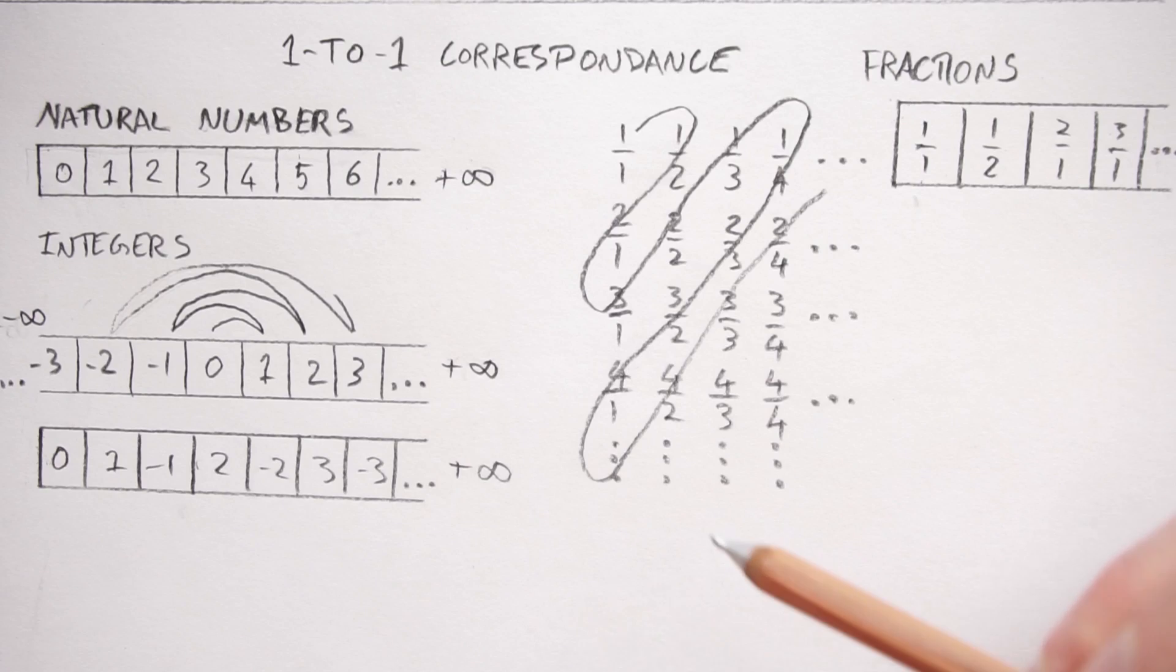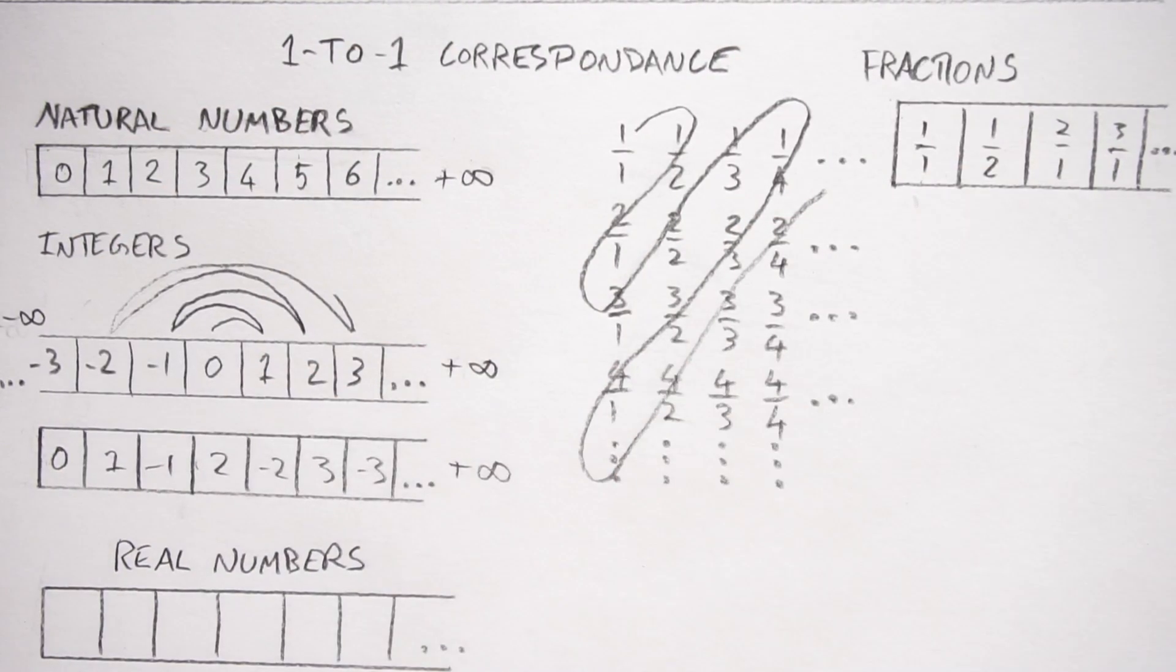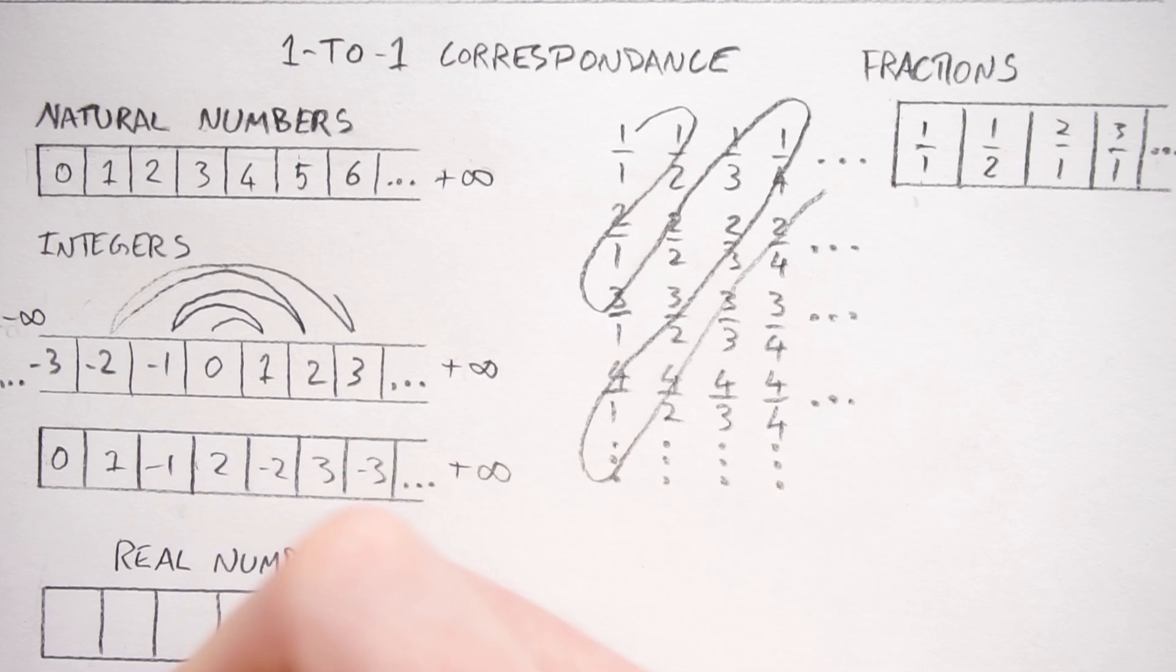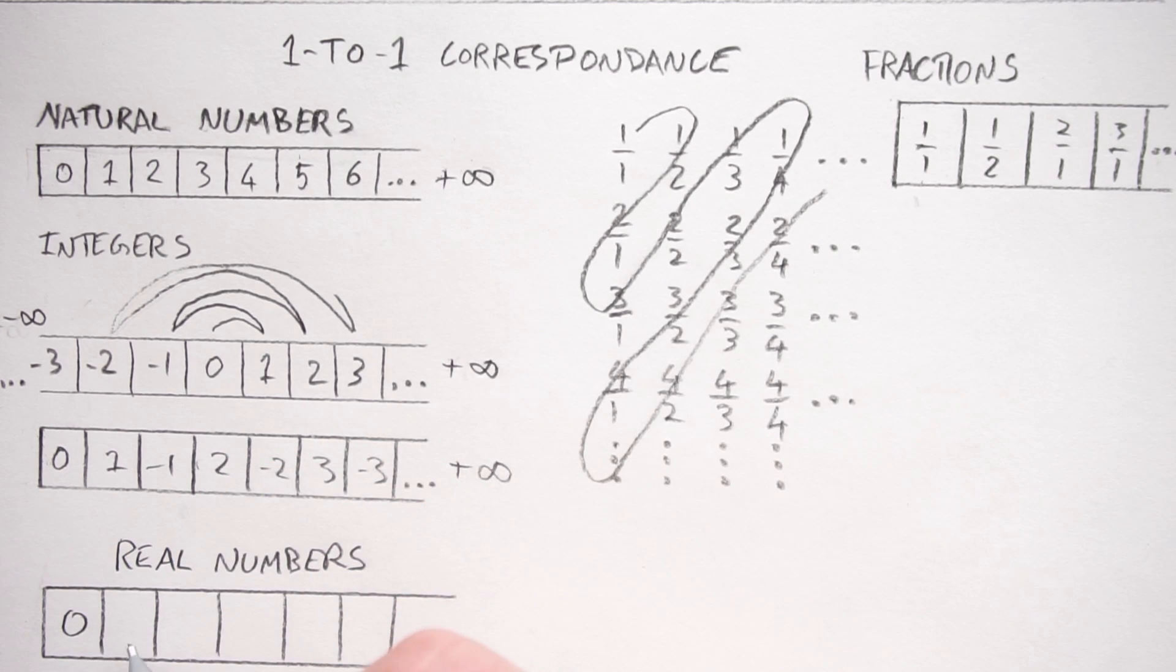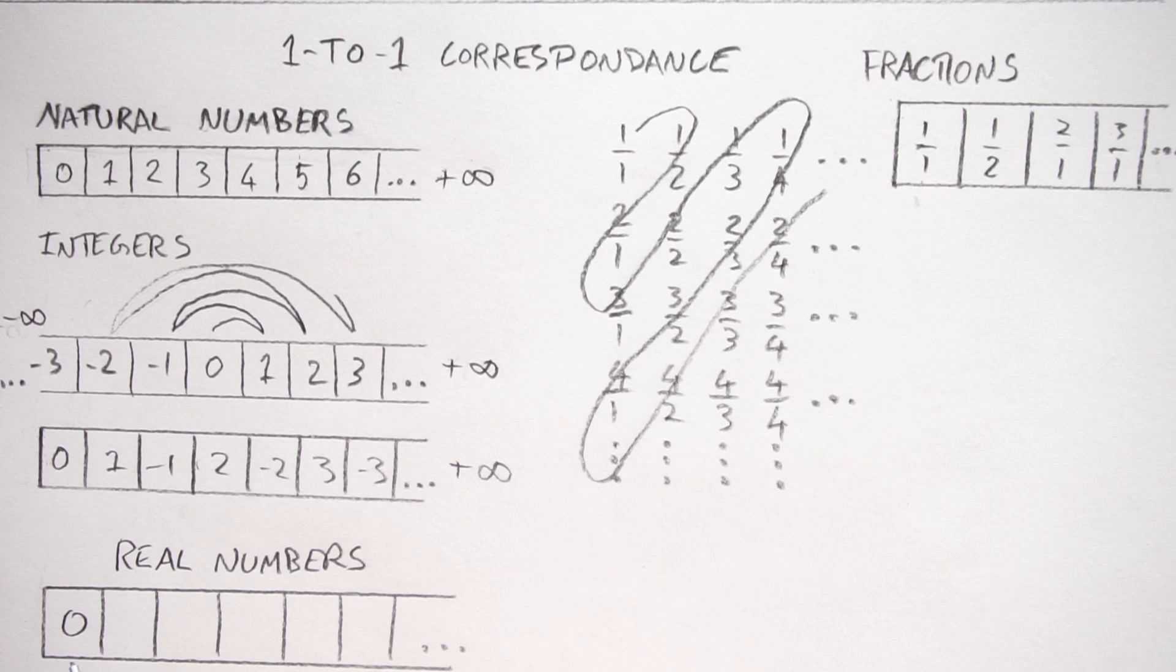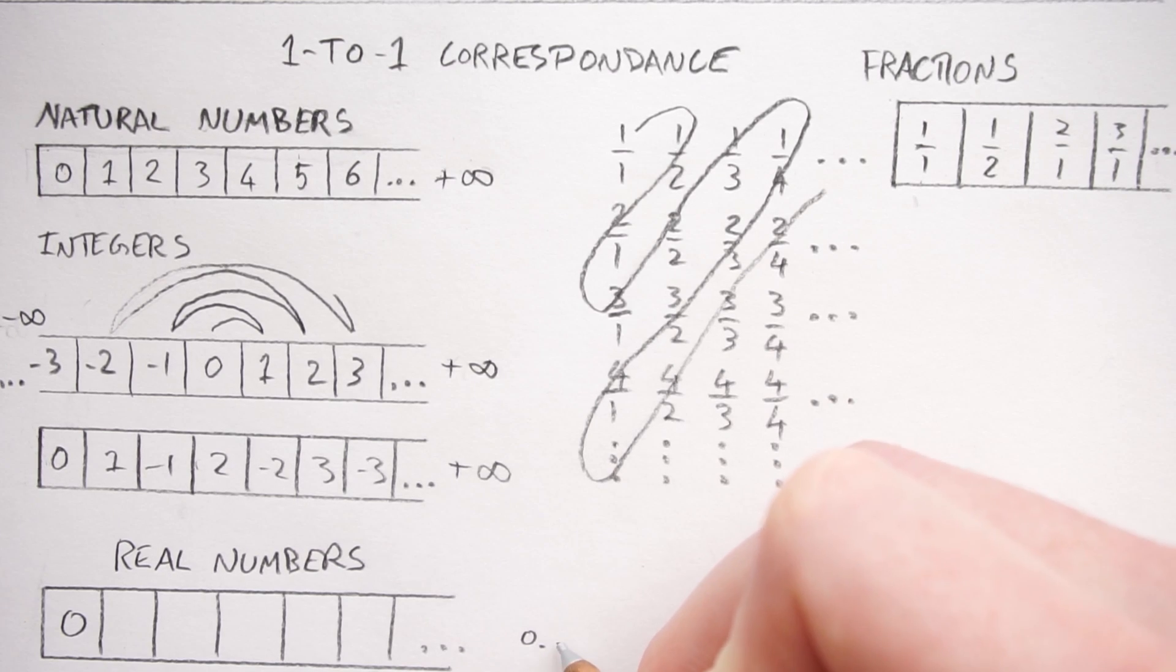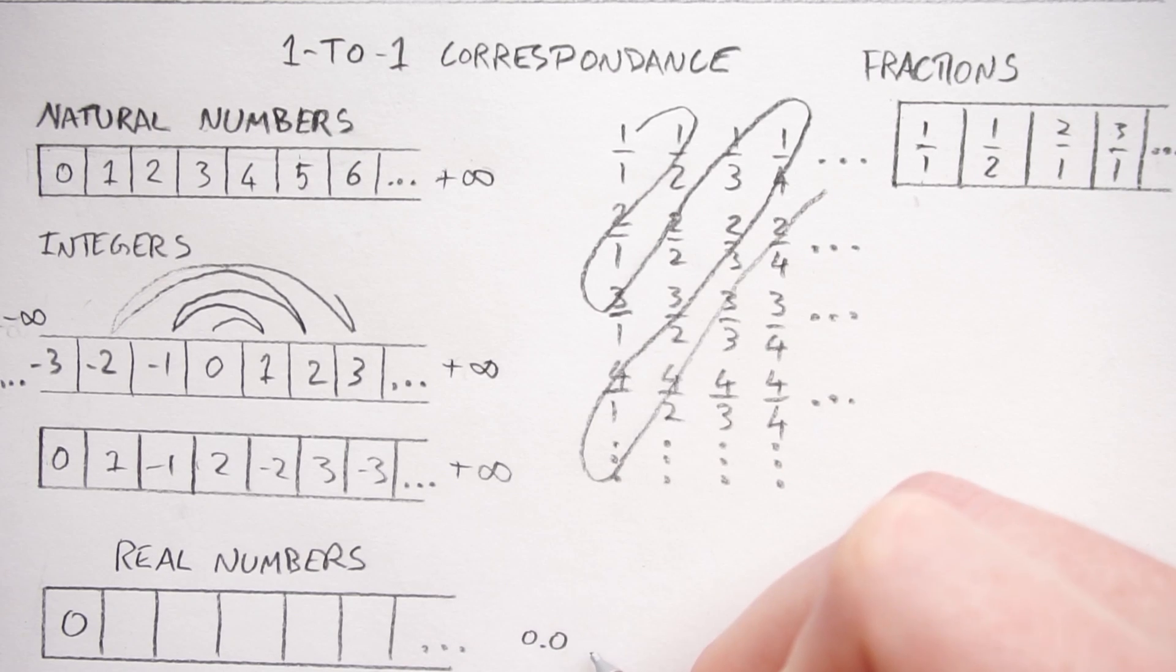So now let's do the same thing for real numbers. Okay, in the first real number we'll just put zero. And now what we want to do is put the next real number, that's the first real number above zero.